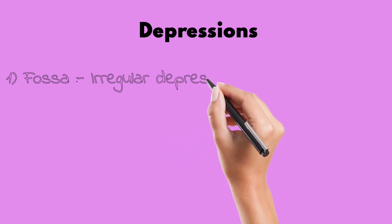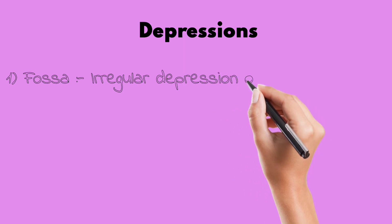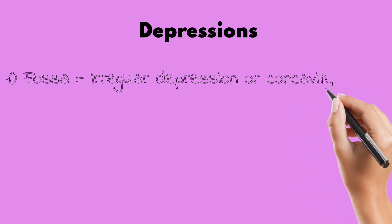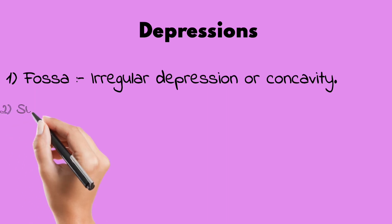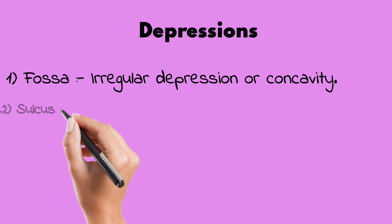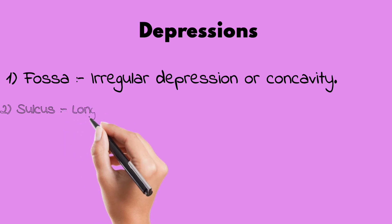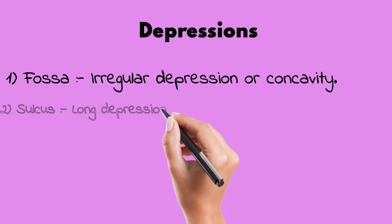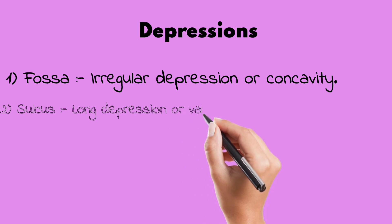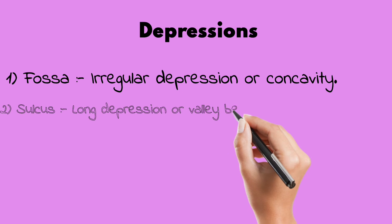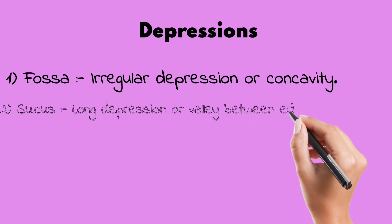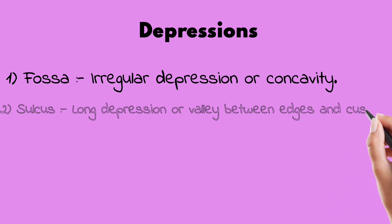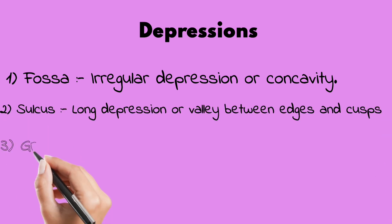Sulcus are long depressions or valleys between the edges and the cusps that incline and meet at an angle. They are longer in depth than fossa. The definition: sulcus is a long depressional valley between the edges and cusps that inclines to meet at an angle.